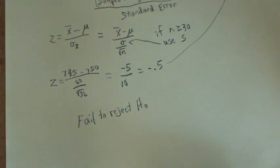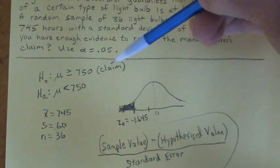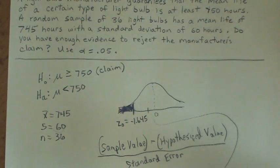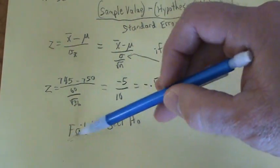So what does that mean in this case? Well, if you look at our null that contained the claim, the claim was that the average length of a light bulb should be at least 750 hours. Since we're not able to reject that—we're failing to reject it—we can't reject their claim.